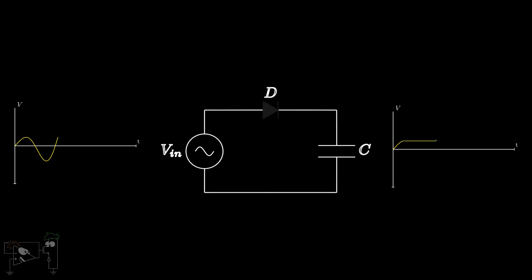If the input rises above this peak value, the diode again starts to conduct and the capacitor gets charged to the new peak value.